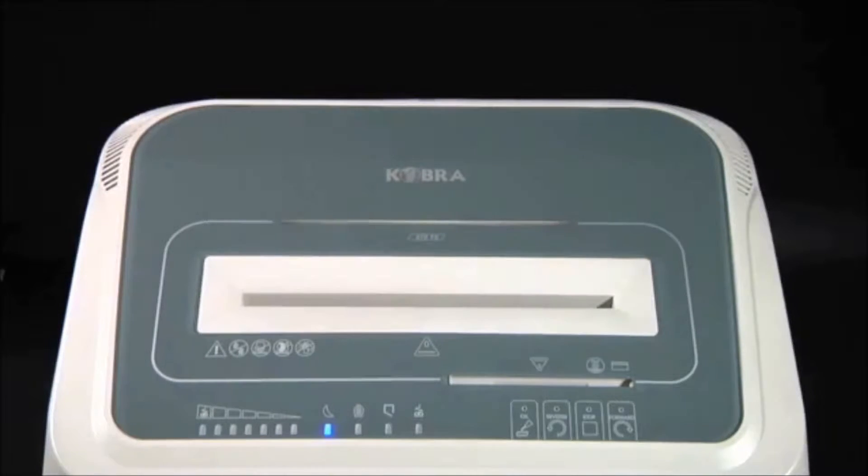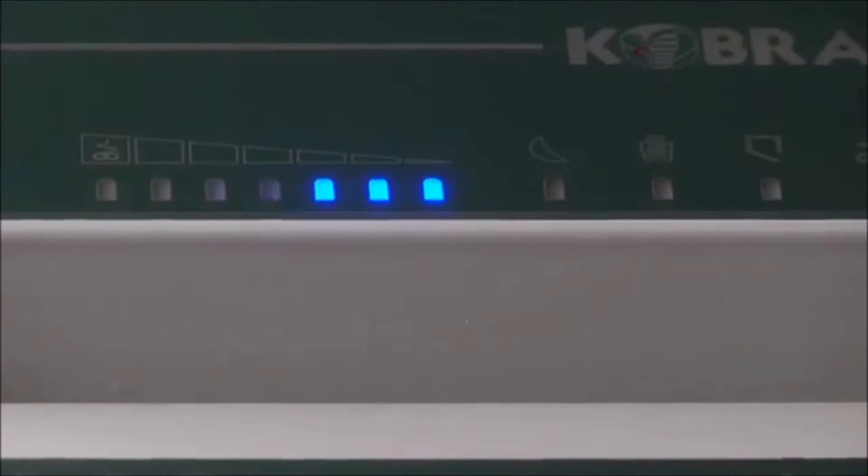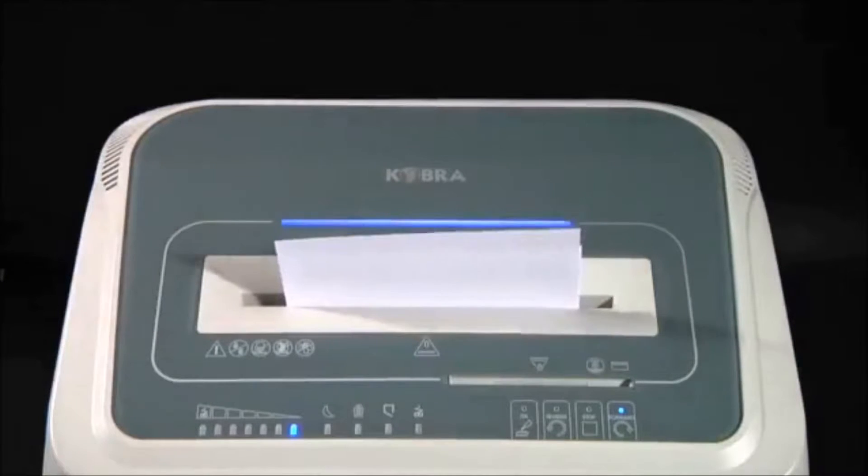Cobra 270 shreds up to 32 sheets at a time. Optical indicators show the shredding load required to optimize shredding.